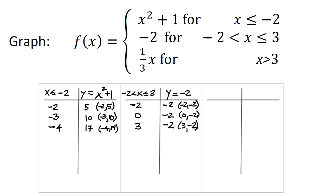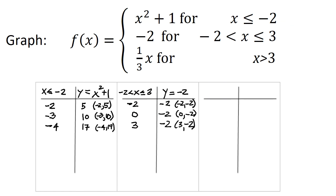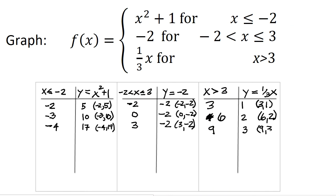Now the final piece. I want to consider all values where x is strictly greater than 3. In this case, y equals one third times x. When x equals 3, y equals one third times 3, so that's 1 — the point is 3, 1, but I can't include it since it's strictly greater than. Let's use x equals 6, because that's divisible by 3, so y equals 2 — the point is 6, 2. And x equals 9: 9 divided by 3 is 3, so the point is 9, 3.